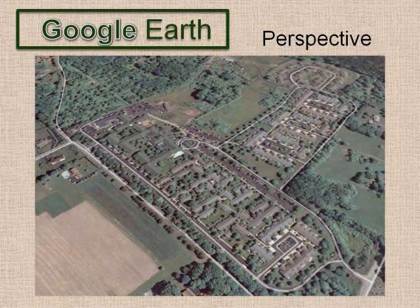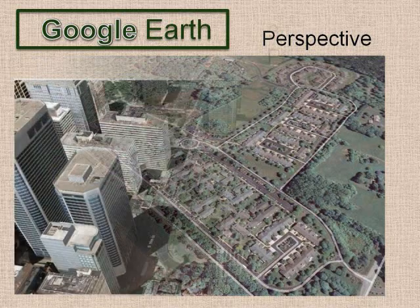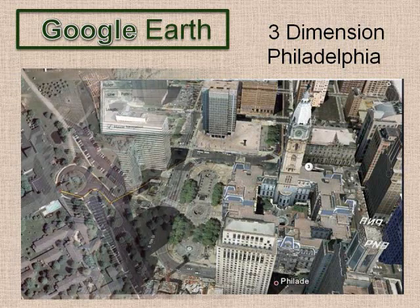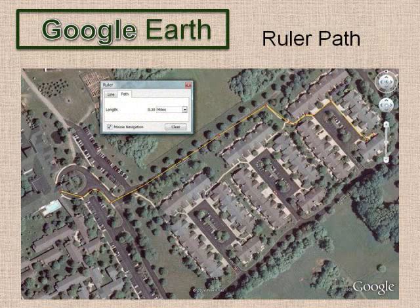Tilt and zoom in for perspective views, like this one of Whitehorse Village. Here is a view of Philadelphia City Hall in 3D. You can use the ruler to draw a path on the map and measure distances.